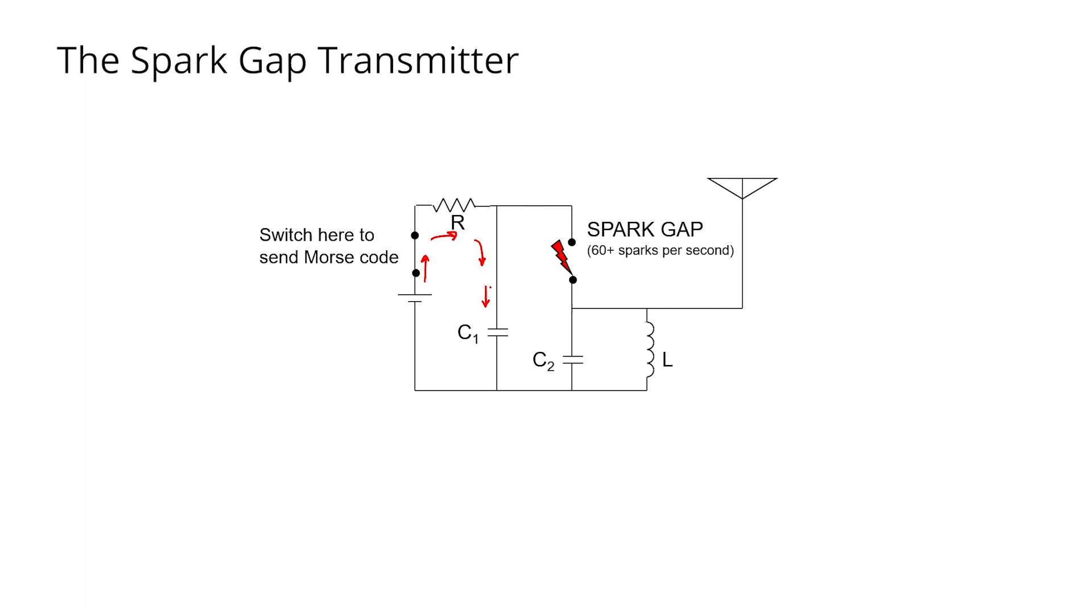Now at this point in time, none of the current from the battery is going to flow over through the spark gap, because initially, C1 and C2 are both at the same zero initial voltage. And with zero voltage across the spark gap, we're not going to create a spark. So capacitor C1 is going to charge.